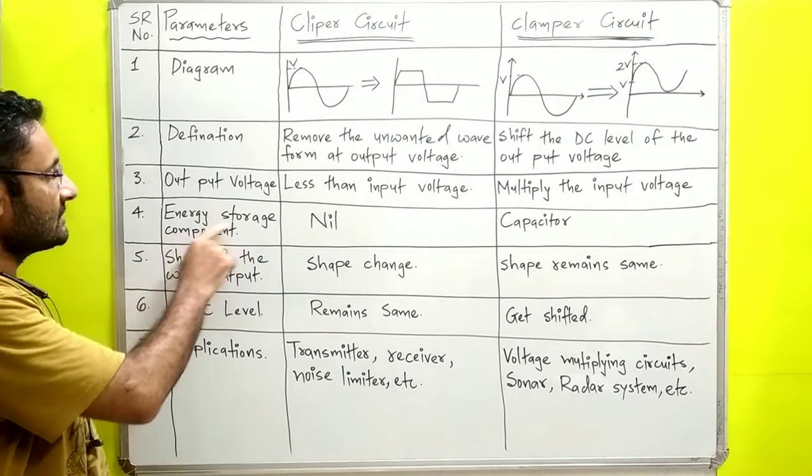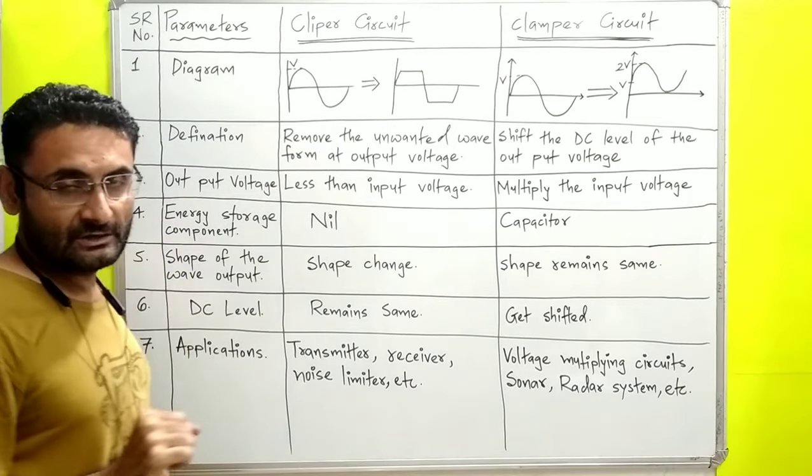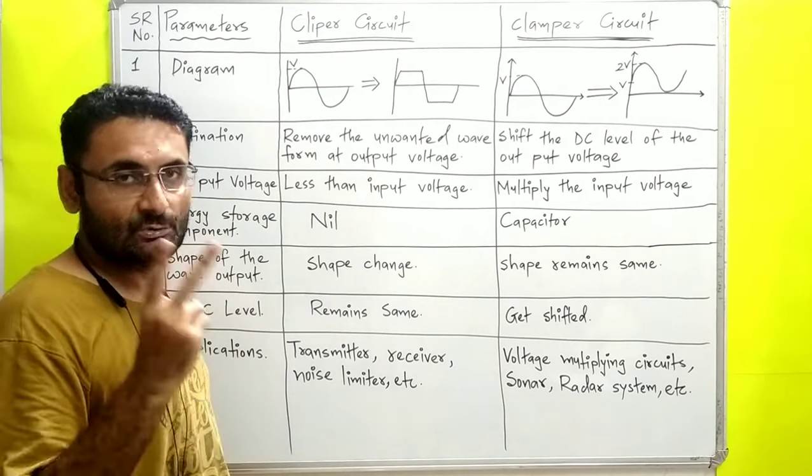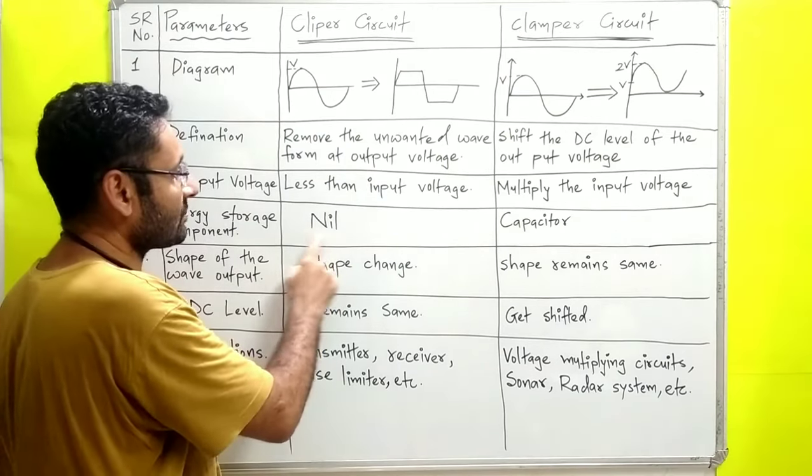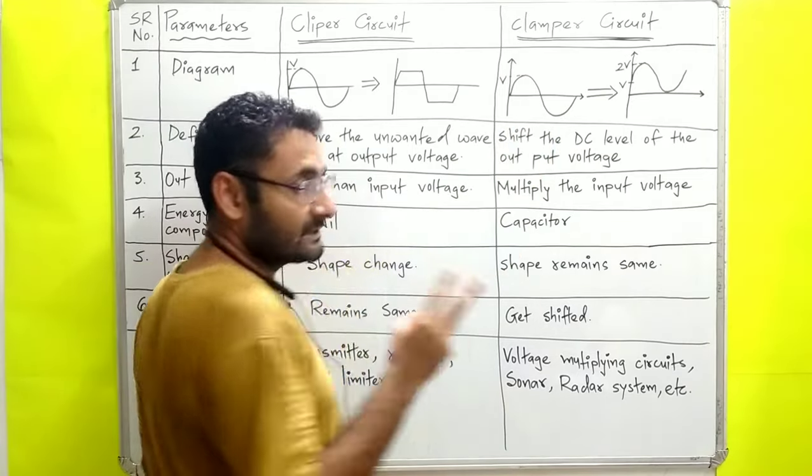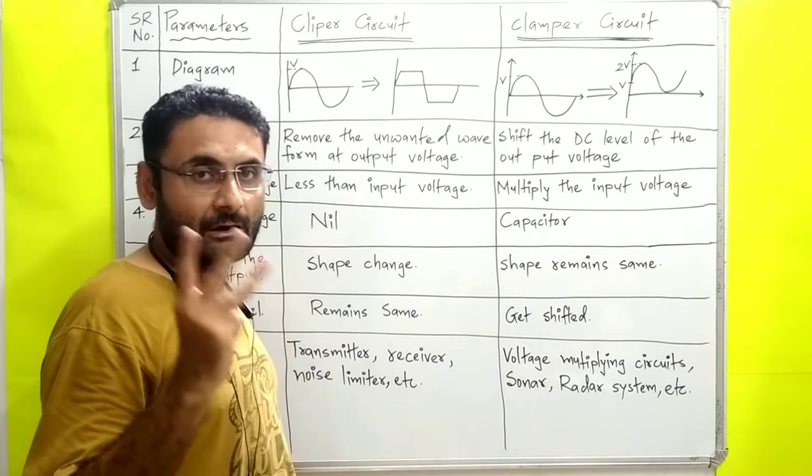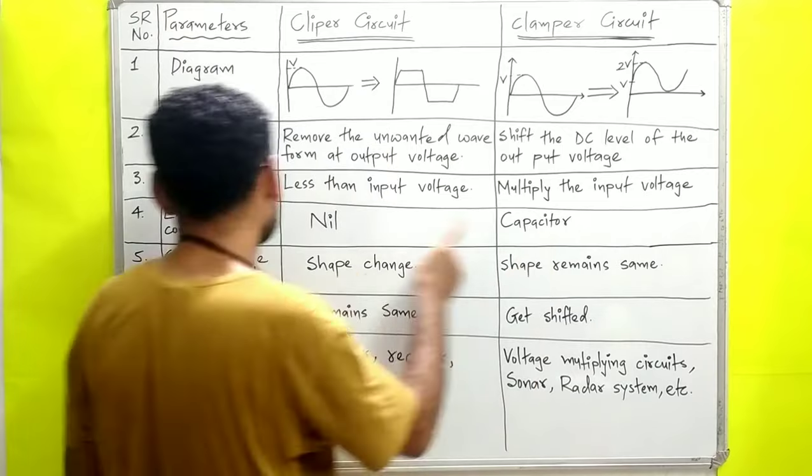Next, the energy storage component. In the clipper, we use two components: the diode and resistor, which do not store energy. The energy storage component is nil. In the clamper, we use three devices: diode, resistor, and capacitor. The capacitor acts as an energy storage device.